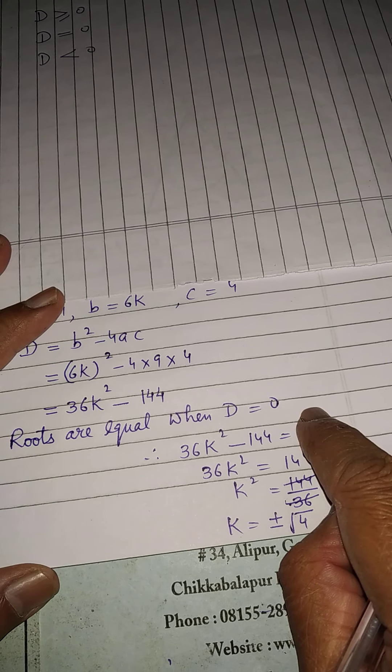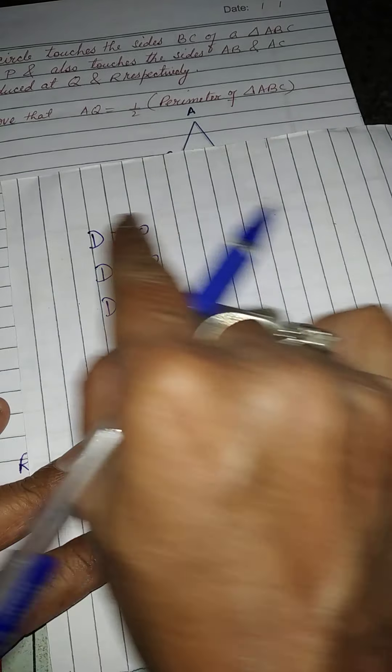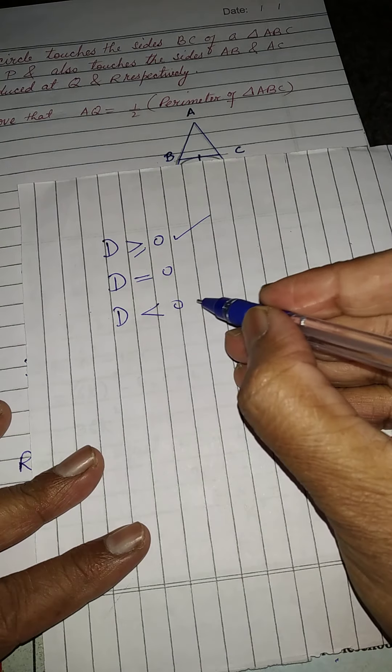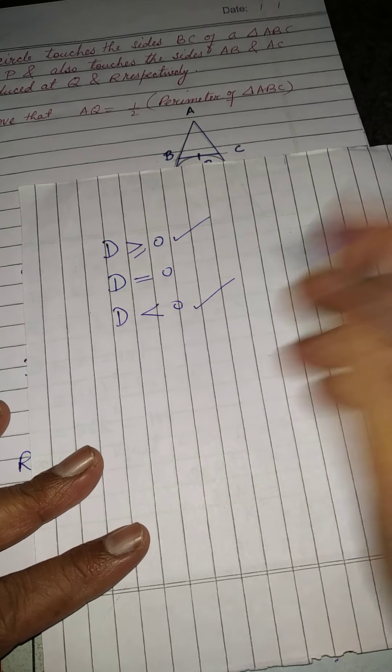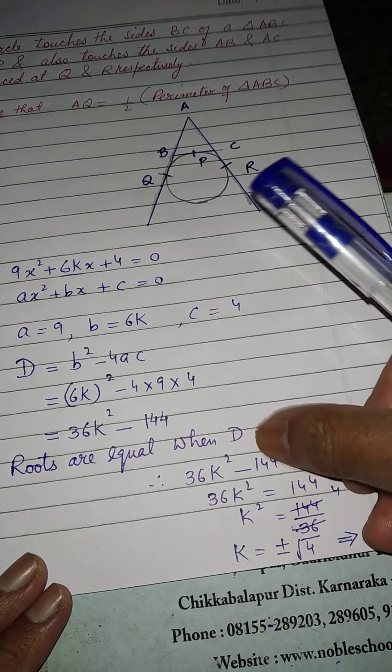Up to here process will be same, only here we will have to change. If roots are real, then we will have to put d is equal to 0. If they are saying roots are real, only real, they are not saying about equal, then this condition will be applied. If they are saying roots are not real, in that case, this condition will be applied. Up to here solution will be same, only here we will have to change.